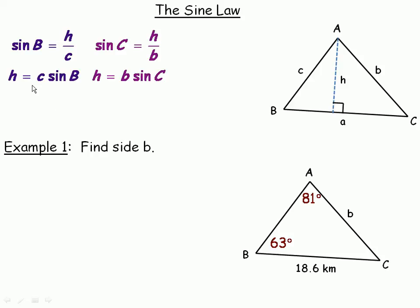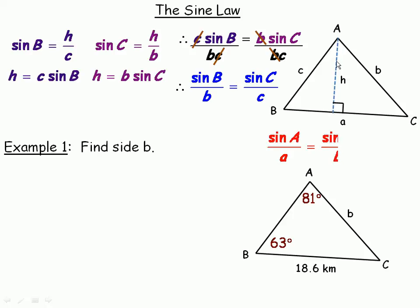Notice in both cases, h is the same thing, so that means c sine B has to be the same as b sine C. We can conclude that because they're both equal to h, they're both equal to the same thing. If we divide both sides by the product of sides b and c, the c's divide out here and the b's divide out here, then we get sine B over b equals sine C over c. That is the same thing I was showing in the geometry sketchpad part. In general, and we could draw another perpendicular and include sine A over a as well, this is what the sine law looks like: sine A over a equals sine B over b equals sine C over c. Those ratios are constant for all angle-side pairs in any triangle.